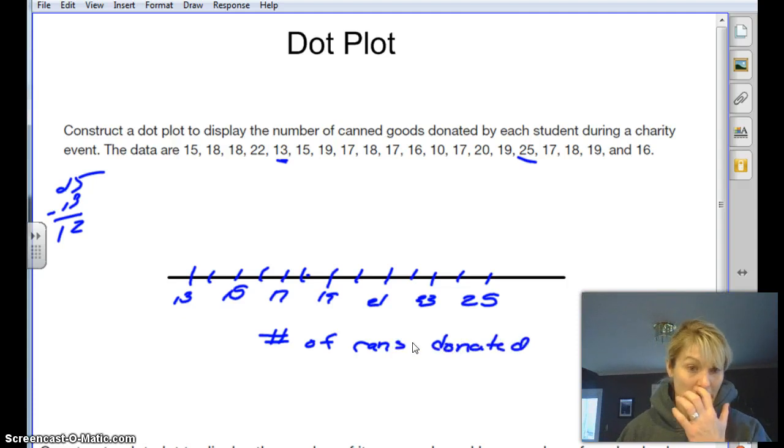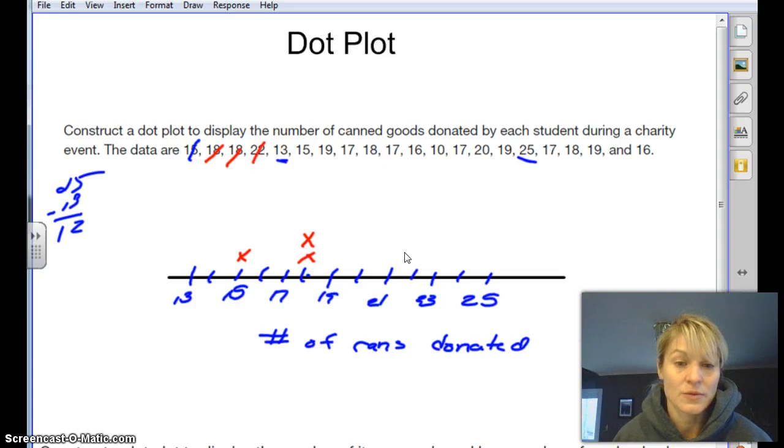Then basically each time we see the amount of cans, we're going to put a little x there. So we have an amount of 15 cans. I'm going to put one x over 15 and then 18. So I'll put an x here and then another 18. So that one goes on top. Each one of these represents 18 cans. Then we have 22.